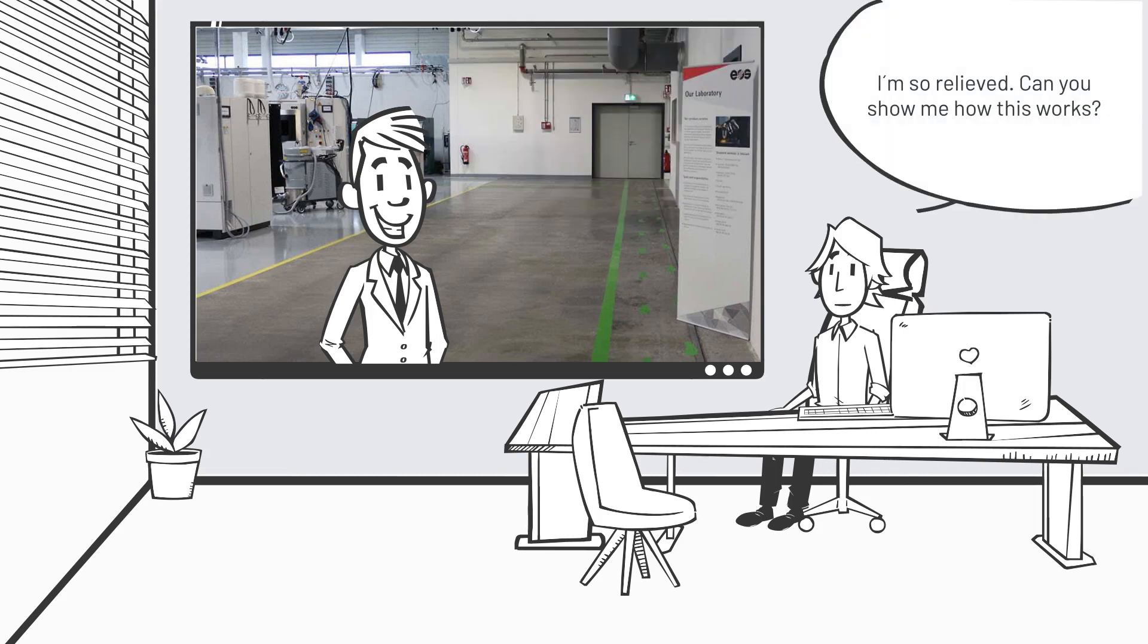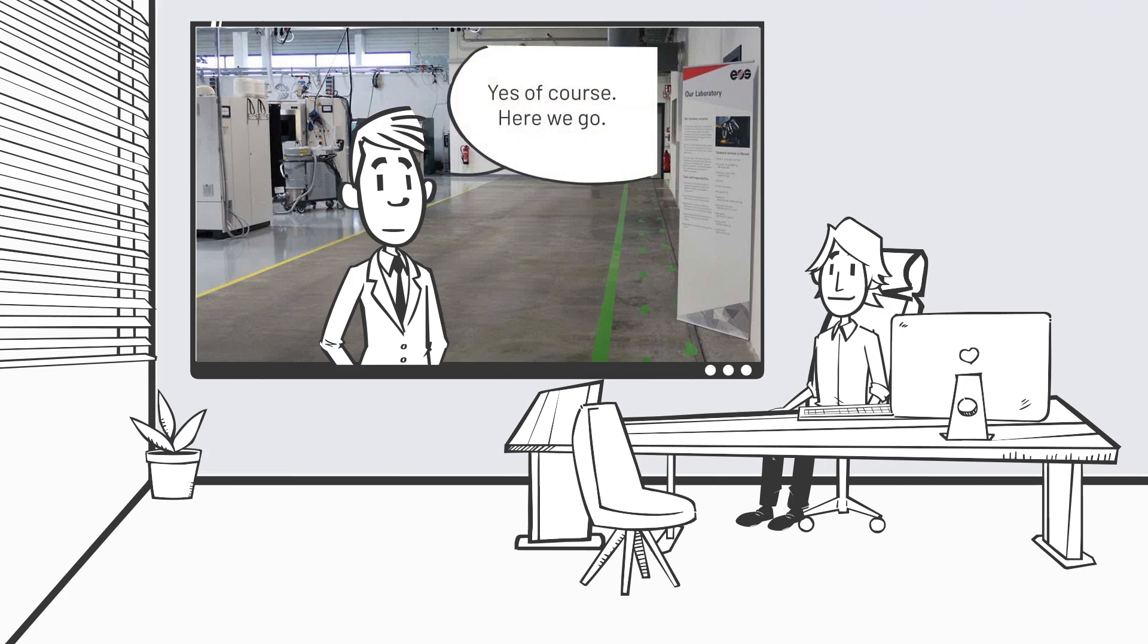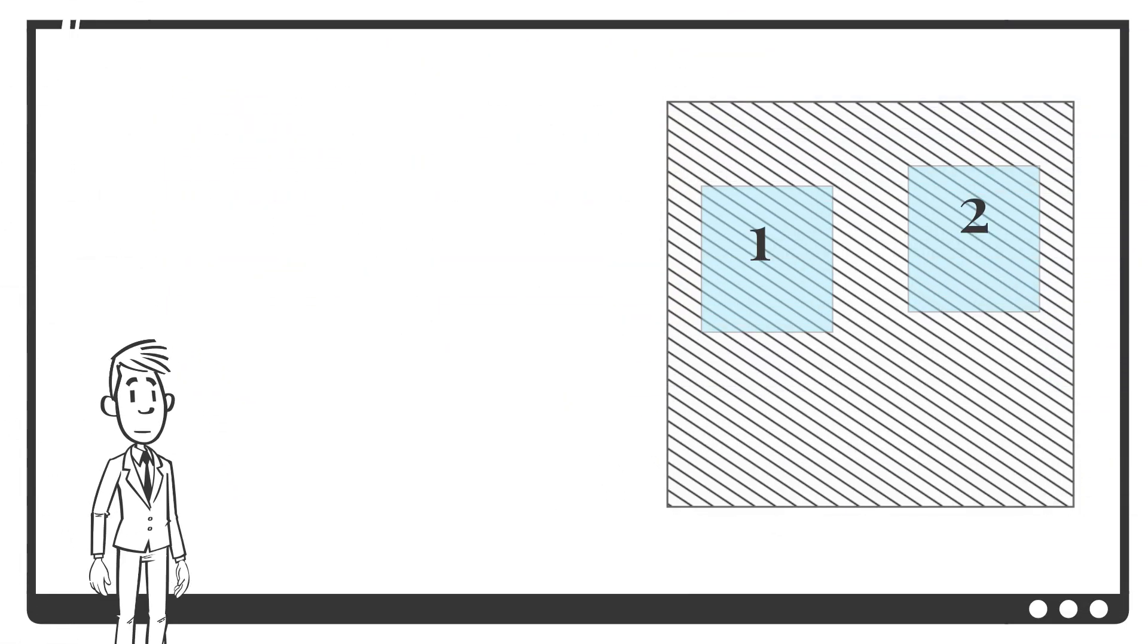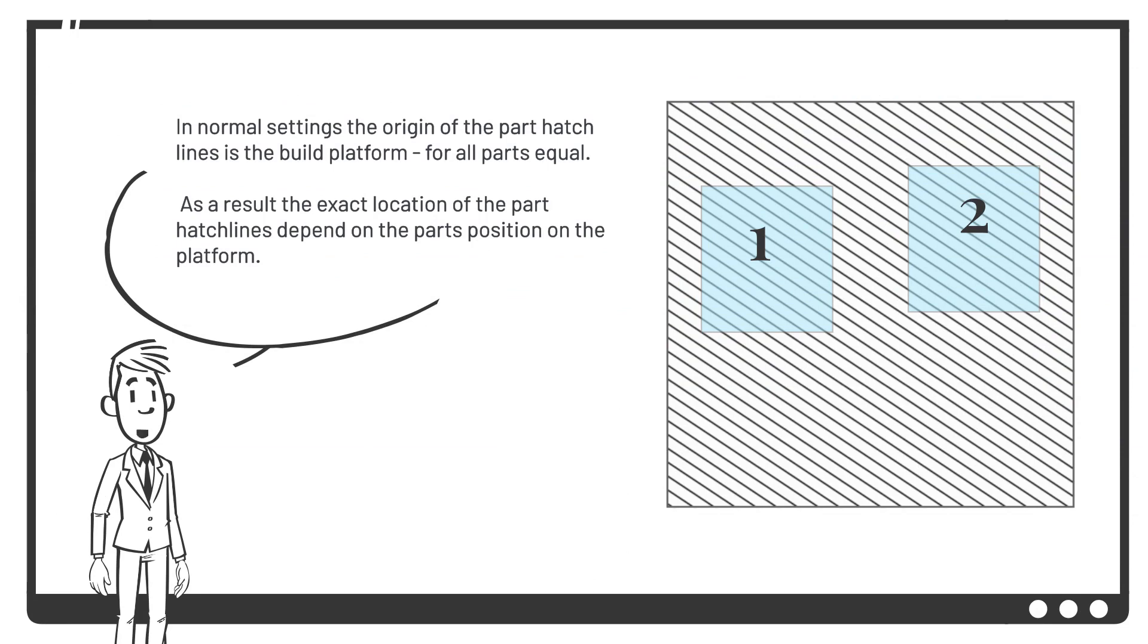Can you show me how this works? Yes of course, here we go. In normal settings the origin of the part hatch lines is the build platform, for all parts equal. As a result the exact location of the part hatch lines depend on the parts position on the platform.